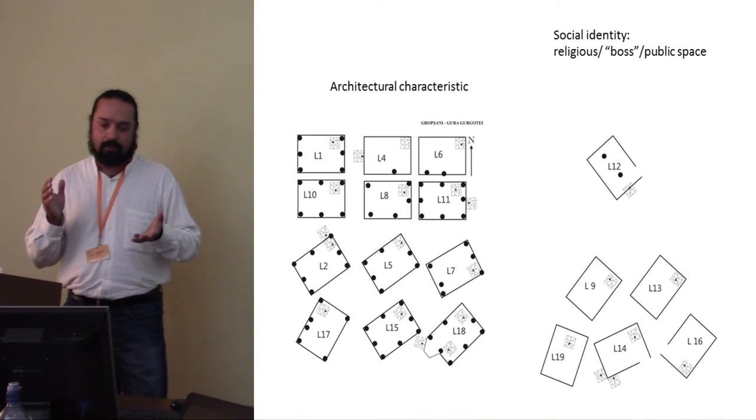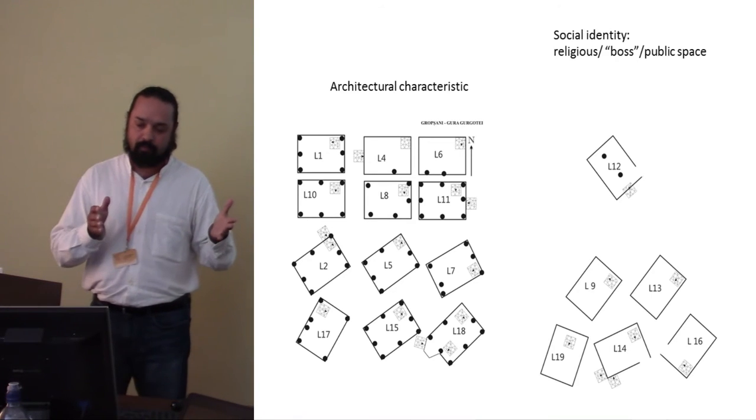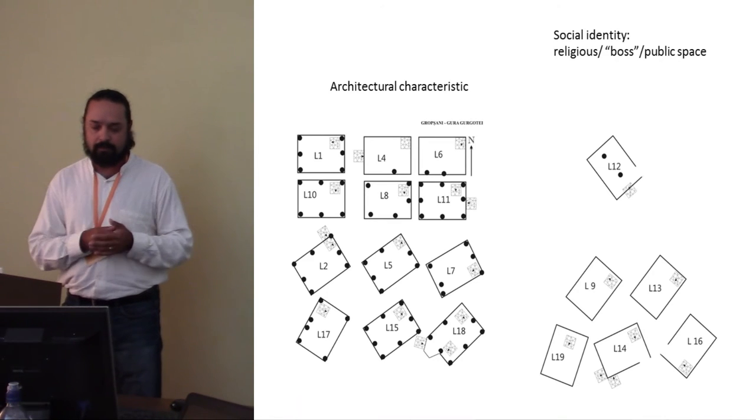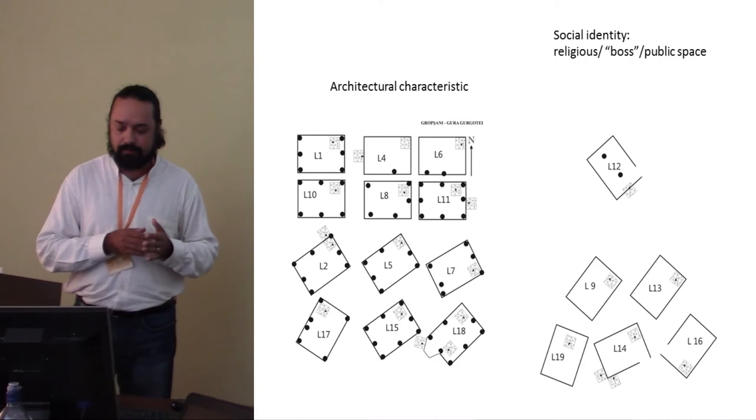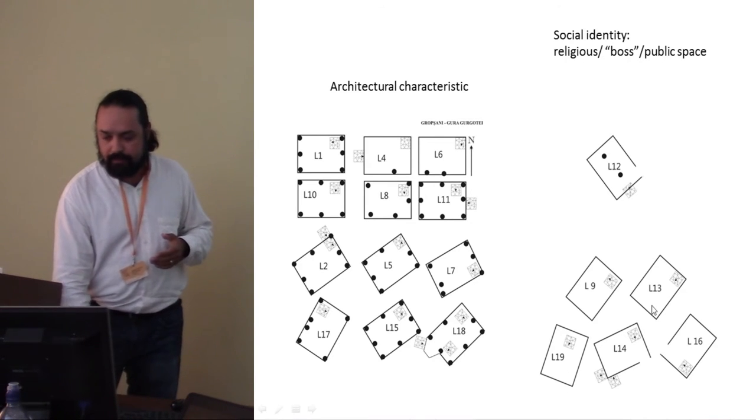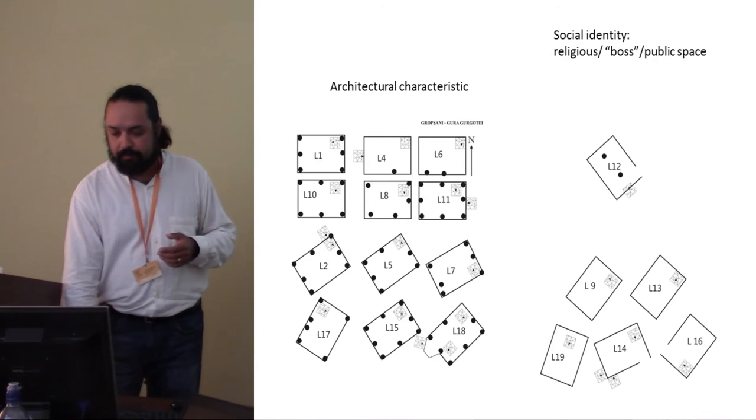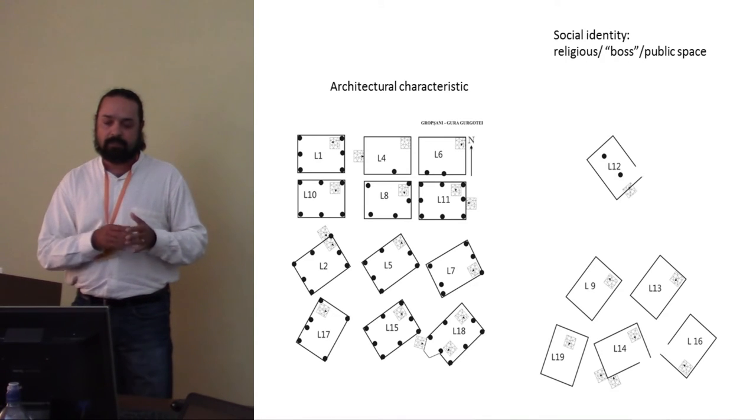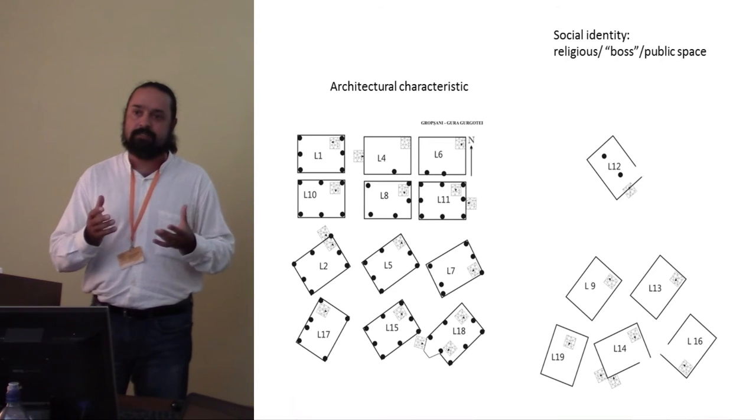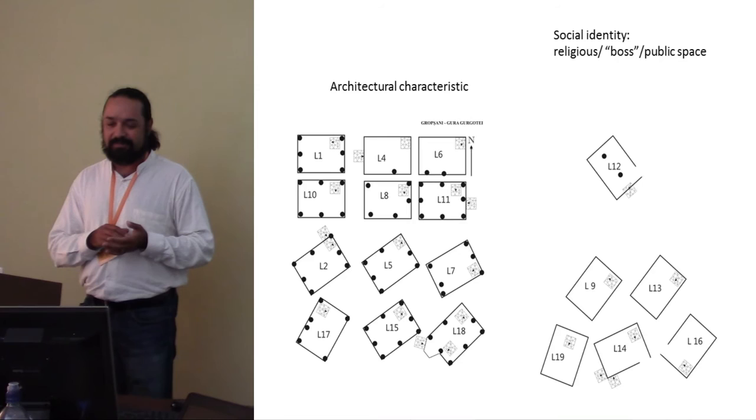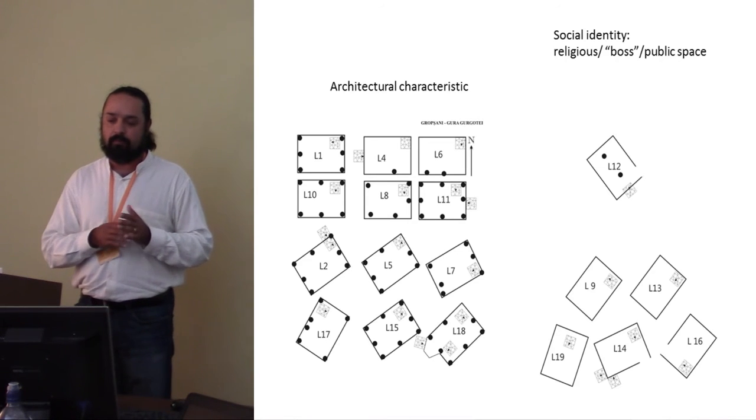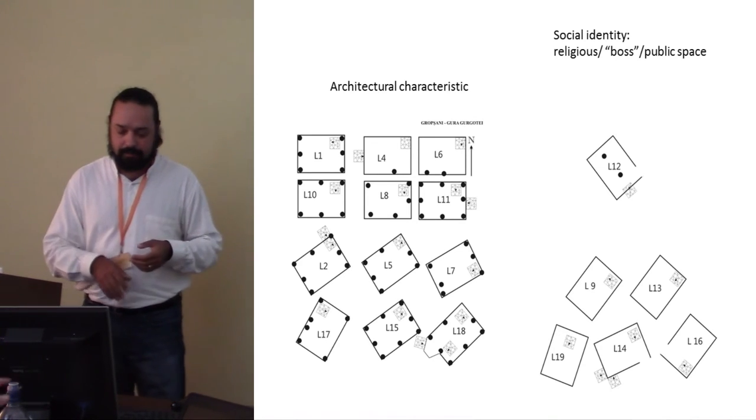Another brief example, it's the same settlement and you can see there are three types of architecture. One group of dwellings have many post pits, so have a heavy wooden architecture based on posts set in the earth. Another group without any kind of post pits, and only one single building has only two posts on the main axis. And we wonder if those kinds of different architectural characteristics can signalize some difference in use of those buildings. And probably dwelling number 12 can be viewed either as public space or let's say boss dwelling.